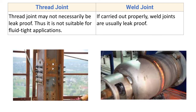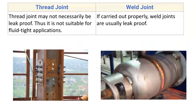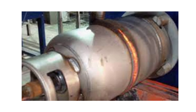Thread joint may not necessarily be leak proof, thus it is not suitable for fluid tight applications — we cannot reliably store fluid, whether air or liquid, inside a component joined by threaded joints. Weld joint, if carried out properly, is usually leak proof. For example, an LPG cylinder uses welding, allowing high-pressurized gases or liquids to be stored safely inside.